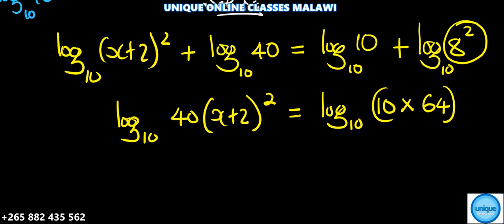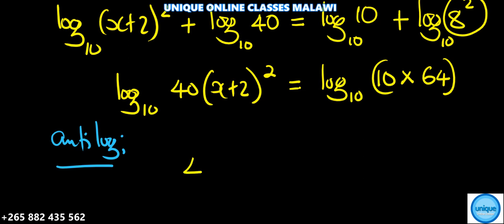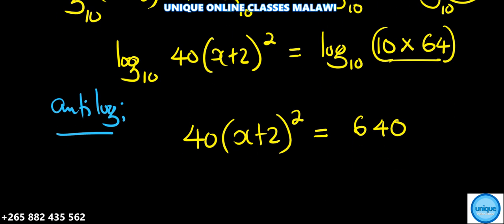The next thing is to anti-log. We can do anti-log here. Anti-log means removing the logs - anti means against. So after doing anti-log, it will be 40 times (x+2)² is equal to 640.